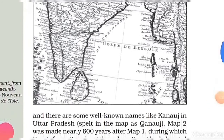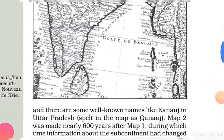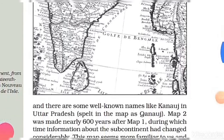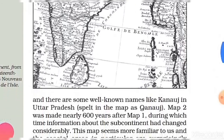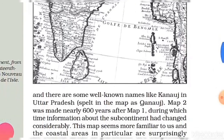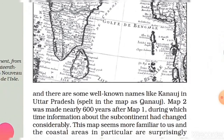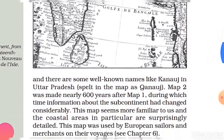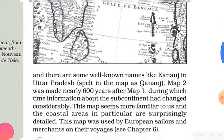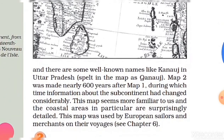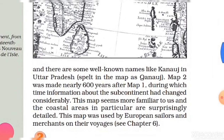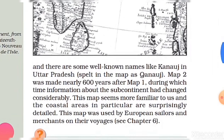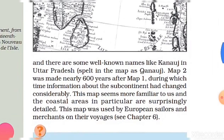When historians read documents, maps, and texts from the past, they have to be sensitive to the different historical backgrounds and the context in which information about the past was produced.